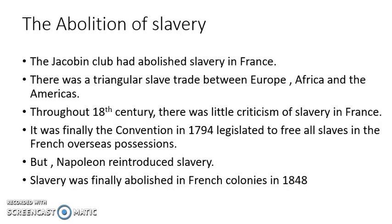The government which was formed after the Jacobin Club in 1794, known as the Convention — with elected legislative councils and a directory — legislated to free all the slaves in the French overseas possessions. So it was the Convention in 1794 which made a law to free the slaves.